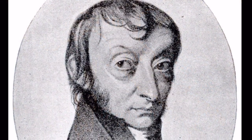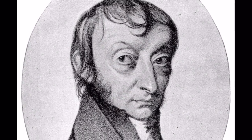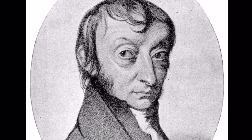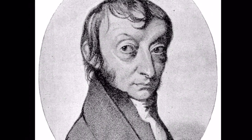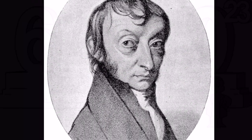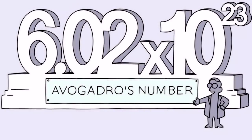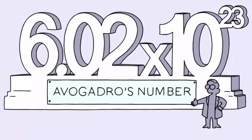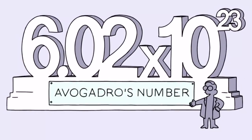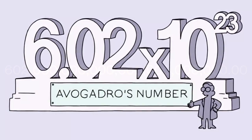Internally born and raised, Avogadro made a thing called moles, which is a constant number of 6.02 times 10 with 23 zeros at the end.